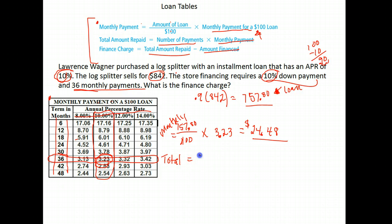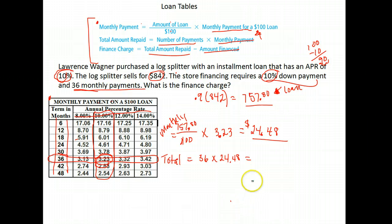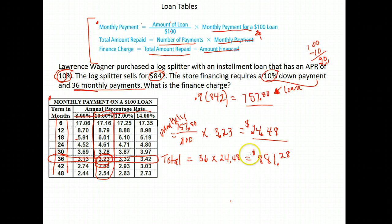Now we want to find out how much we're going to pay total. We're paying for 36 months and our monthly payment is twenty-four dollars and forty-eight cents. So we take 36 times $24.48. When we do that we get eight hundred and eighty-one dollars and twenty-eight cents. That's the total amount we're repaying — and notice we only borrowed seven hundred and fifty-seven dollars.